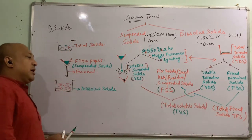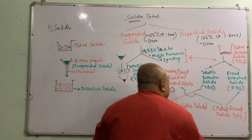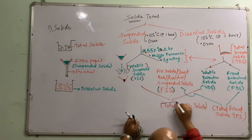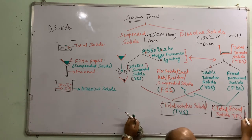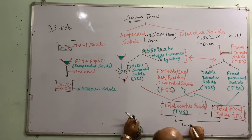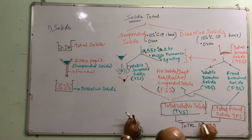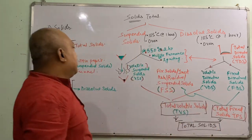Combining Total Volatile Solids and Total Fixed Solids gives you Total Solids again. This is the complete flow chart of Total Solids. Please pause the video if you need more time to look at it.